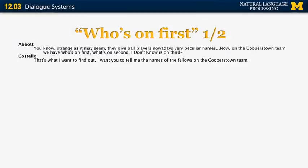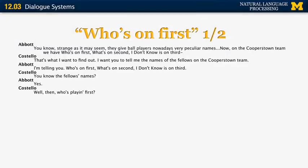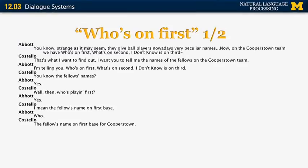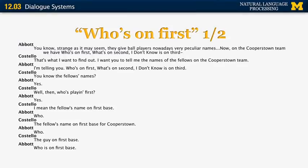First, I'm going to show you an example of a video that you can watch on YouTube — the link is shown here. It's a famous skit from more than 50 years ago by Abbott and Costello. They have a serious misunderstanding when they discuss the names of baseball players. The name of the skit is 'Who's on First.'